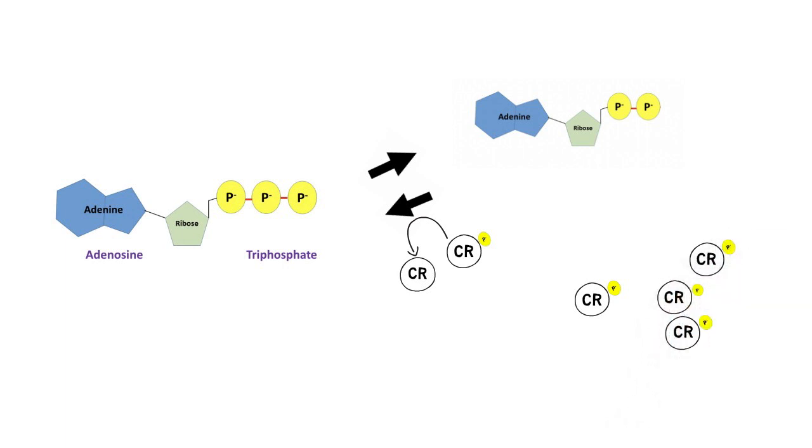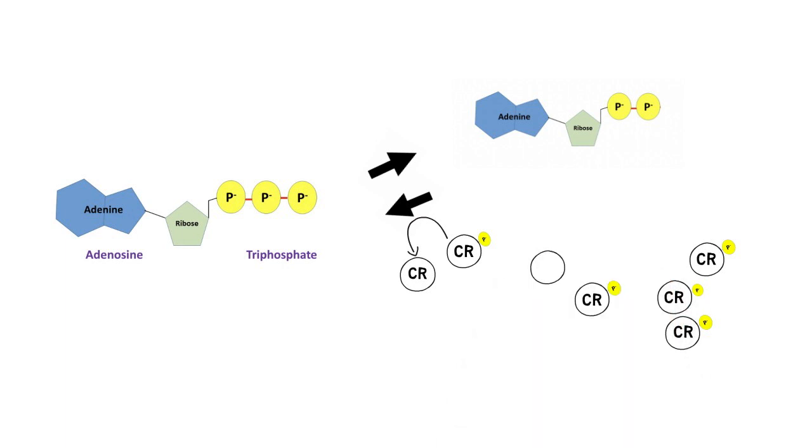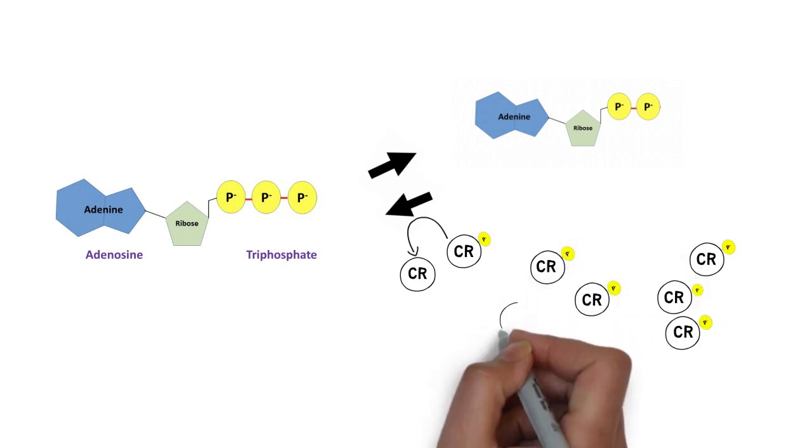The issue that arises within the system of energy regeneration is that the body's natural creatine stores are limited and once it is depleted the body has to revert to using fatty acids or glucose to continue the ATP regeneration.